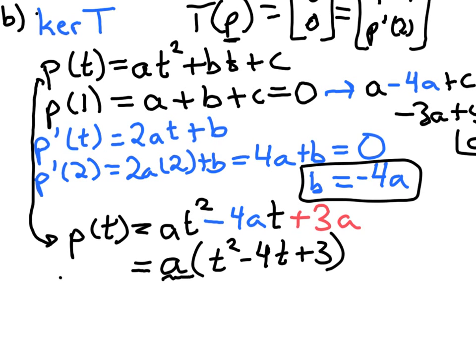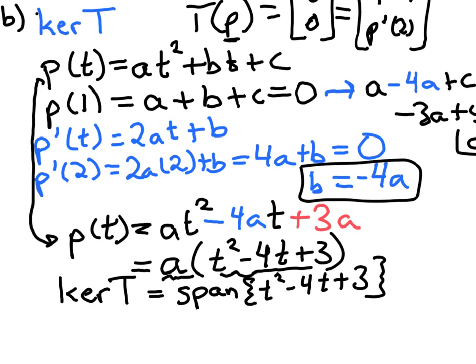So that's the set of all linear combinations of that one polynomial there. So the kernel of T is equal to the span of this polynomial right here, t²-4t+3. So this is our polynomial that spans the kernel of this transformation T. This is the answer to Part B.